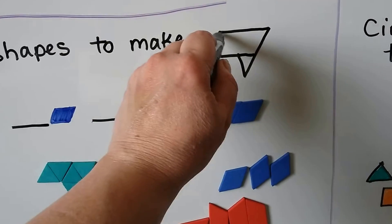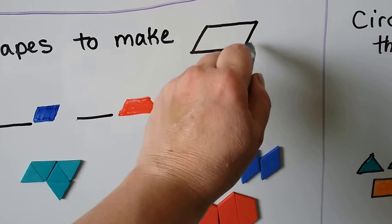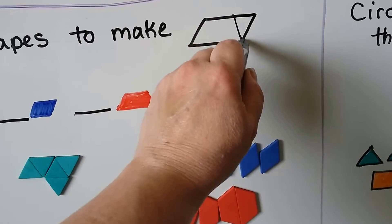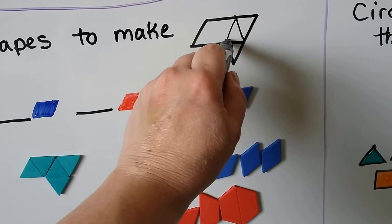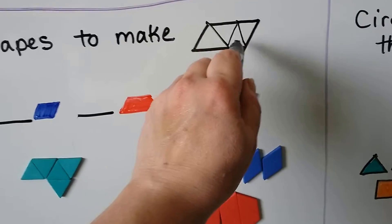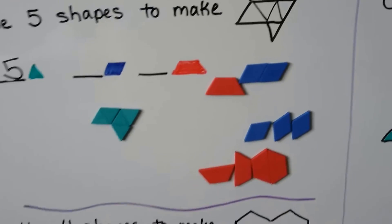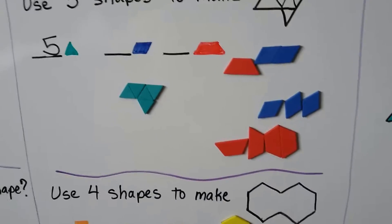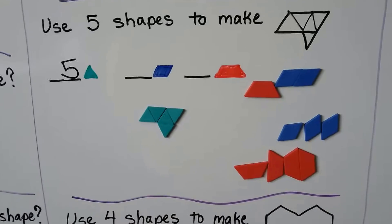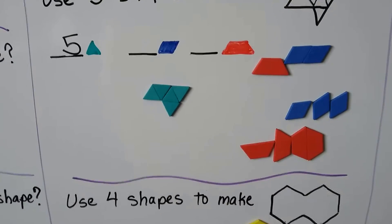It's just splitting it up. We've got a triangle there and there — one, two, three, four, five triangles. My lines aren't perfect, but it would look like that.